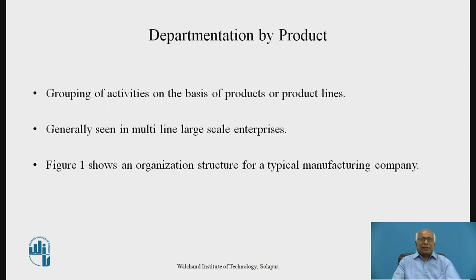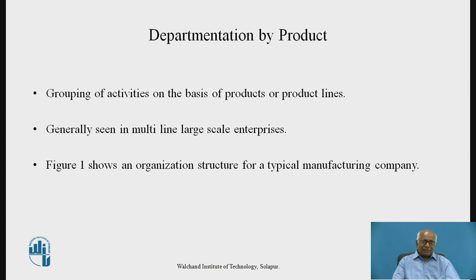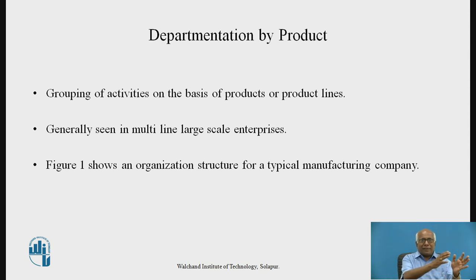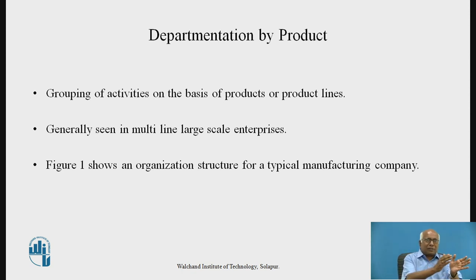First, let us consider departmentation by product. Grouping of activities on the basis of products or product lines is done, rather than functions. For example, if a company has large scale and is operating in different lines — one is cement line, one is automobile line, one is electrical line — then according to product and product line, separate units are set up. This is known as departmentation by product.